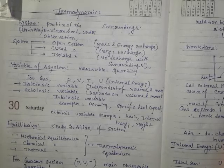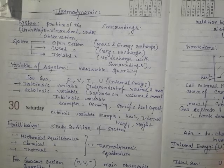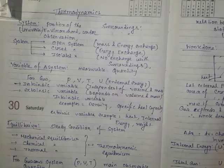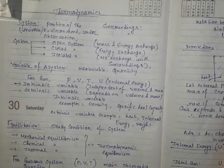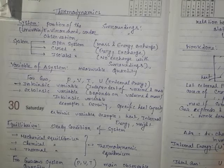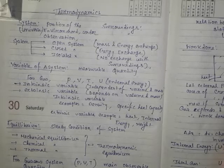An isolated system is a completely sealed system that does not exchange mass or energy with the surroundings. An ideal isolated system is not possible, but a thermos flask is a partially isolated system — that is why cold things remain cold and hot things remain hot for a longer time.